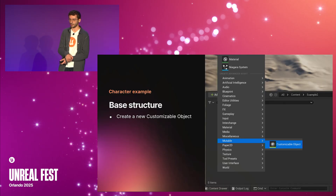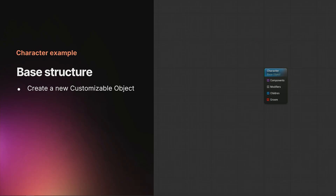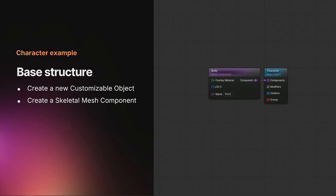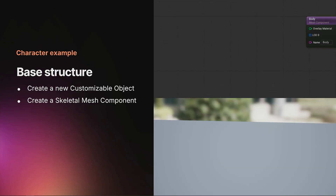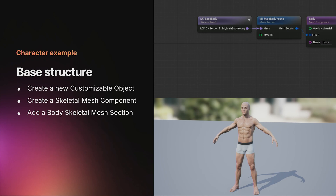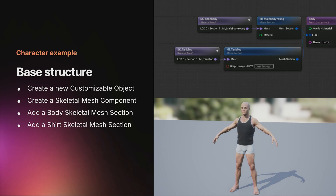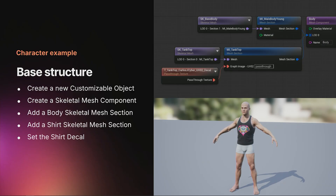First, we're going to create a new customizable object. Our customizable object has a graph which defines all the possible customizations an object will have. The character we're going to create will be composed of a single skeletal mesh component. We'll specify it by adding a new skeletal mesh component node, then add the body geometry as a skeletal mesh section, and also add the shirt geometry as a second skeletal mesh section.